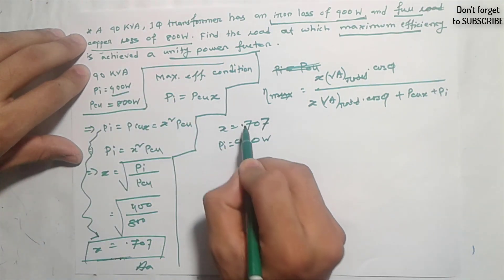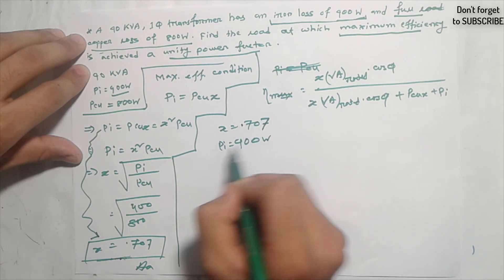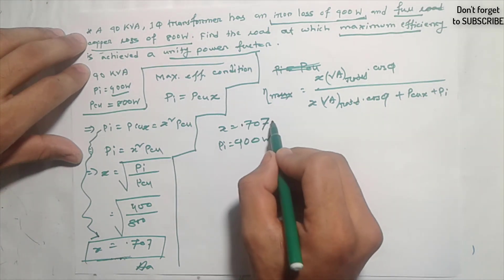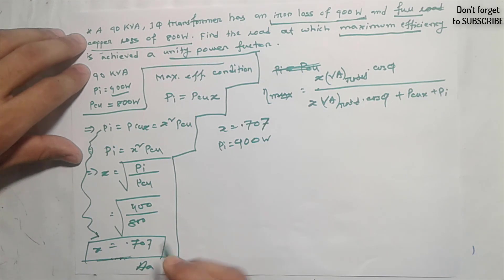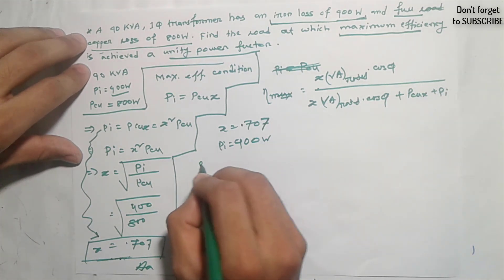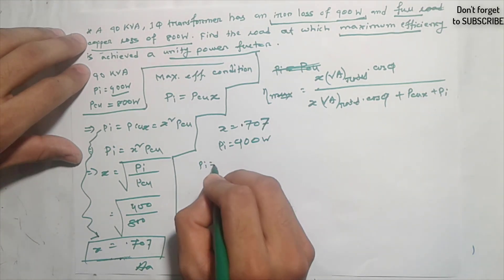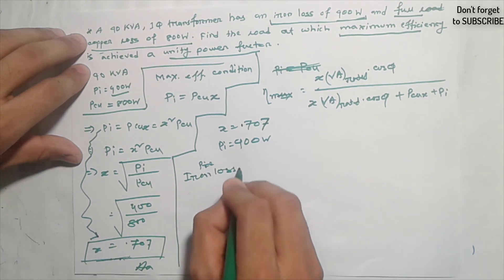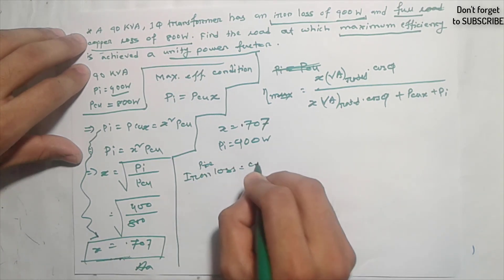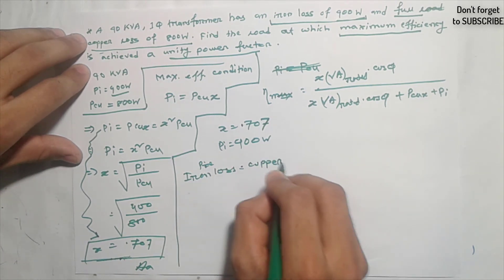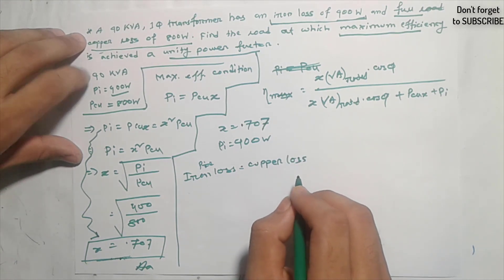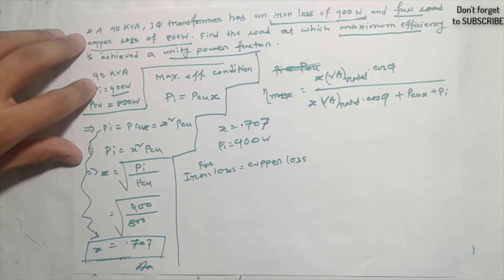At maximum efficiency, iron loss PI is equal to copper loss. I am able to confirm that iron loss equals copper loss, giving us the maximum efficiency condition.